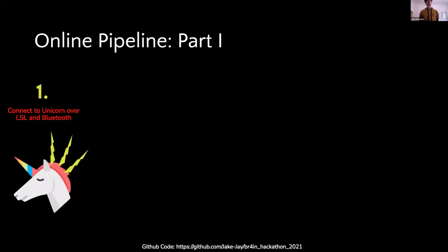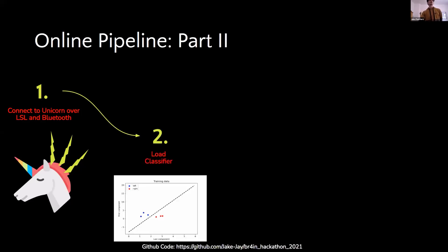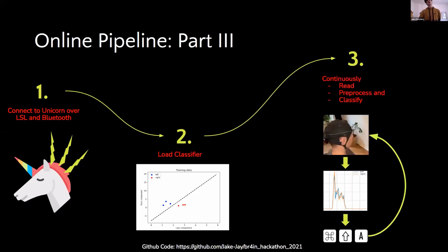Once our classifier was trained, this allowed us to do real-time processing. Our online pipeline looked something like this: first, we connected the Unicorn over the lab streaming layer, then loaded our classifier, which allowed us to continuously read, preprocess, and classify our motor imagery data, and then output a specific key binding which the user had requested beforehand.